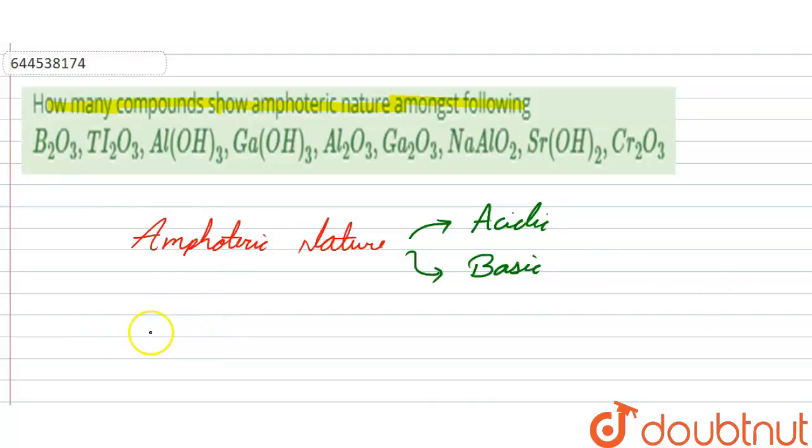So to remember the compounds which show amphoteric nature, we have a trick. The trick is: Zanabe Ali Bekaar gaya Panjabi.